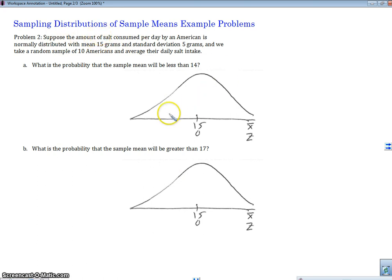Whenever we want to use a normal model for a sampling distribution, we need to talk about its assumptions and conditions. So are the conditions met? In this question, I'll have you read it on your own. It does say that our sample is randomly selected, so that would be our first condition. Our second condition would be that it's less than 10% of the population, and a sample of 10 is definitely less than 10% of all Americans.